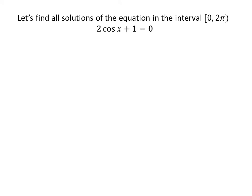Now let us find the solutions to the equation 2 times cosine of x plus 1 is equal to 0, in the interval 0 to 2π. Taking 1 from the left-hand side to the right-hand side gives us 2 times cosine of x is equal to minus 1. Dividing the whole expression by 2 gives us cosine of x is equal to minus one-half.